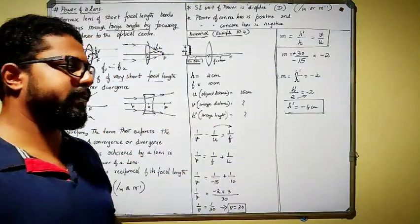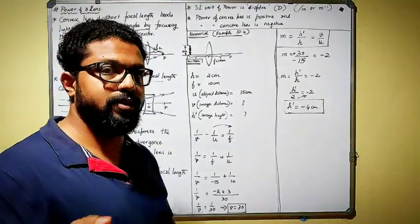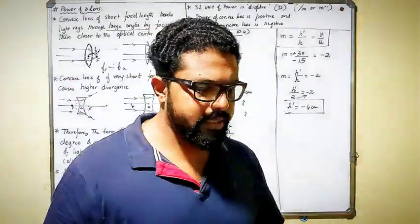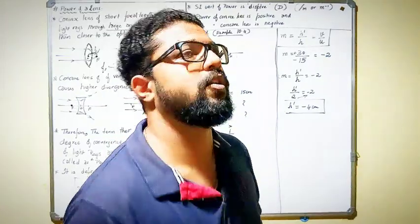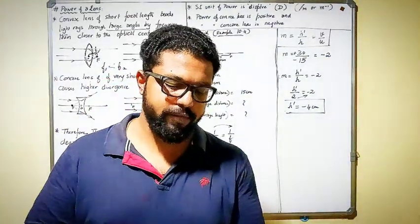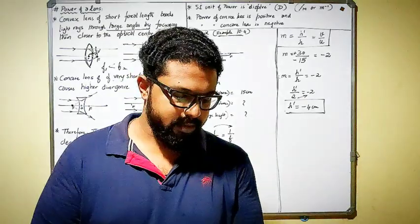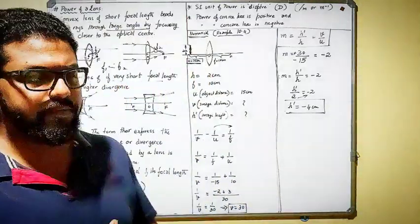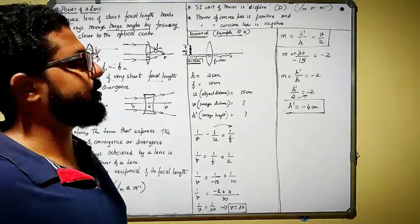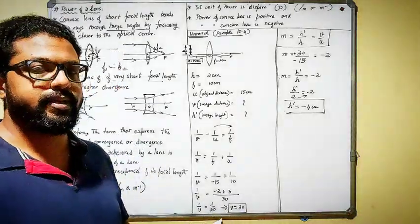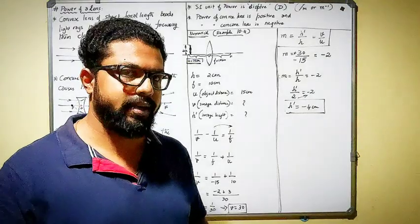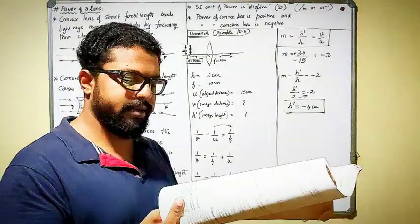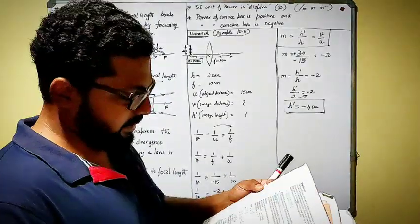I will move on to the numerical now. I will solve one example and the other examples you will solve from the textbook, along with the exercise problems. I will do one sum for your reference. This sum is already in your textbook. It is example number 10.4 on page 182.